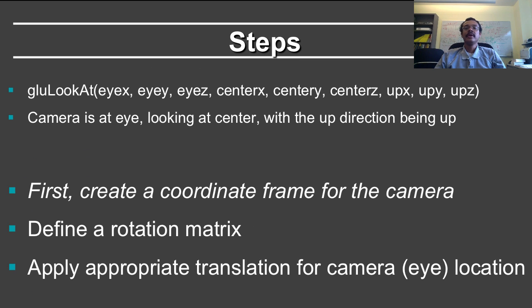It involves three main steps to derive the matrix. First we need to create a coordinate frame for the camera. Then we need to create a rotation matrix corresponding to the coordinate frame. And finally, we need to apply a translation for the camera or the eye location.